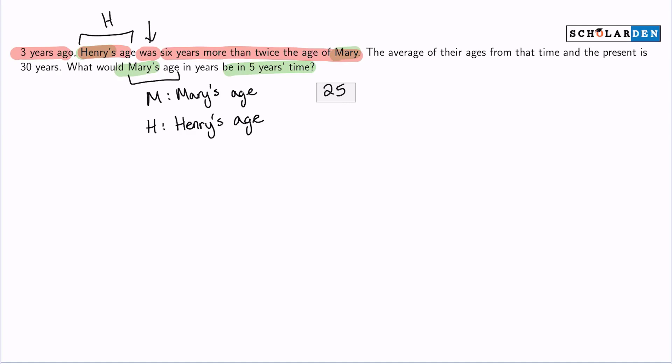Three years ago, that's Henry's age three years ago. Because Henry's current age is H, three years ago it'll be H minus three. Was equals six years more than, so something plus six, twice the age of Mary. That's double Mary's age.